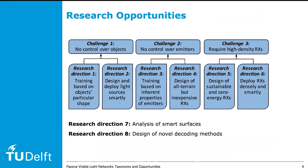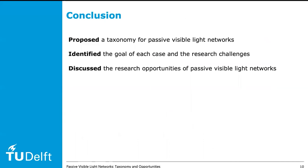Our taxonomy allows us to identify not only the challenges but also eight general research directions in the area of passive visible light networks. Due to time limitations, I skip the details — please read our paper for more information. In summary, in this tutorial I introduced a taxonomy to classify different passive visible light networks, and our taxonomy allows us to identify key challenges and research directions in this area.